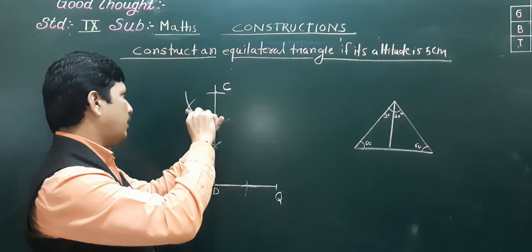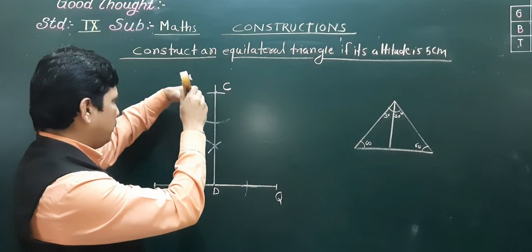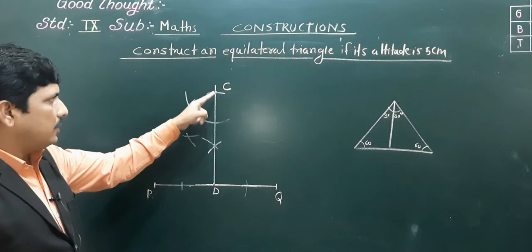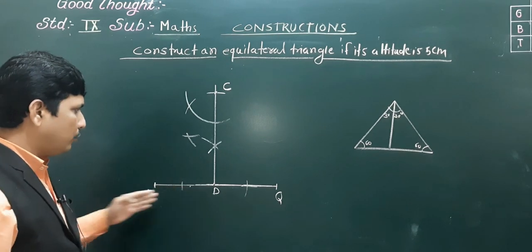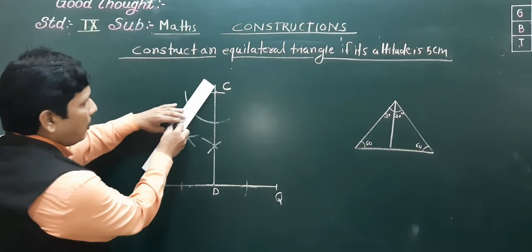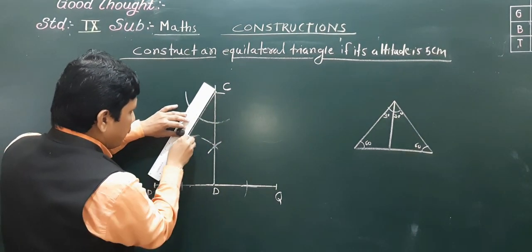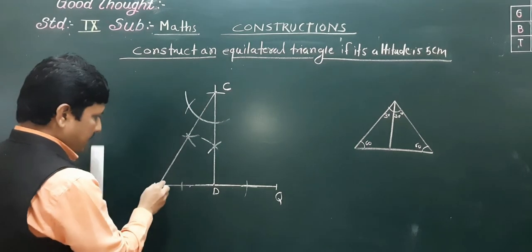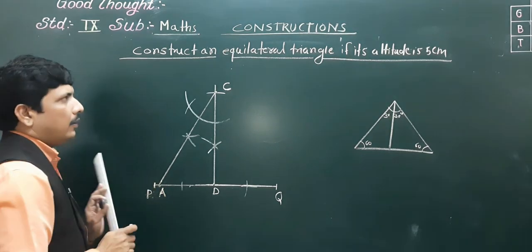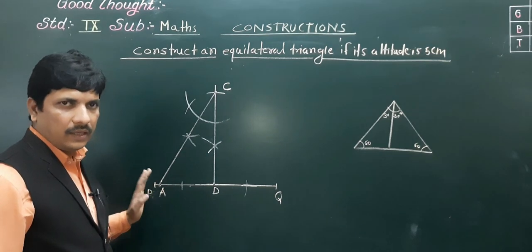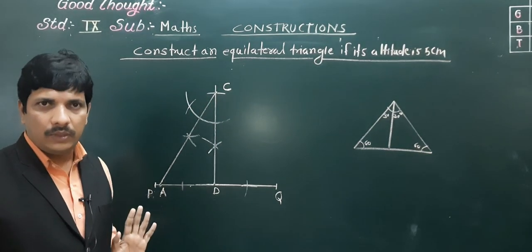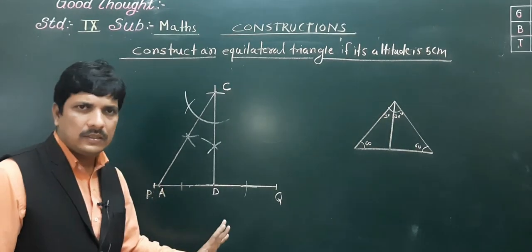To get 30 degrees, bisect the angle: take more than half distance from the arc points and mark intersections. Join the intersection point and extend further — it will intersect PQ somewhere. That intersection point is our vertex A on the base.